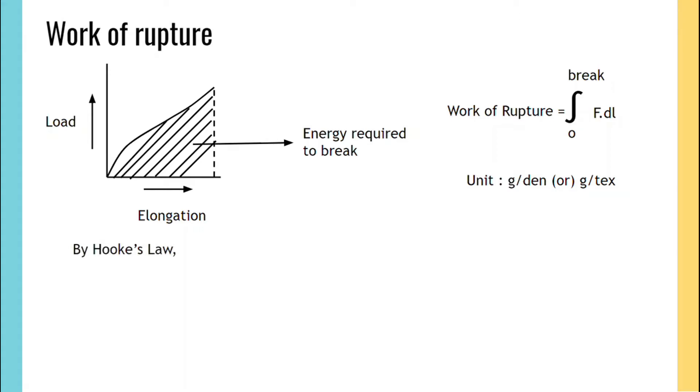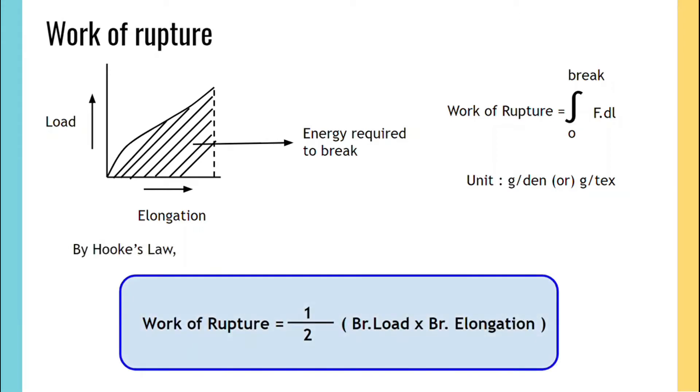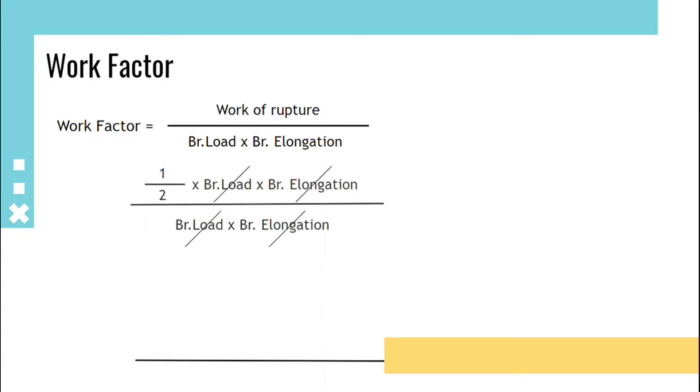Work factor is the ratio of work of rupture upon breaking load times breaking elongation. Substituting work of rupture as half of breaking load times breaking elongation, work factor will be 1/2, that is 0.5 for ideal elastic material. Work factor can be plotted in a graph.